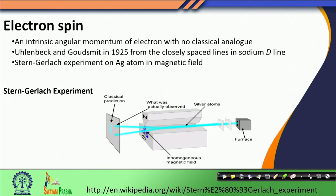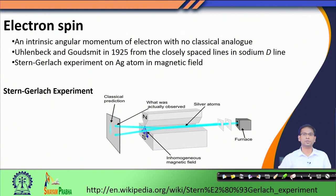Hello students, welcome to today's lecture. We have been discussing the quantum mechanical solution of the hydrogen atom. Today we would discuss one particular aspect of the hydrogen atom problem that we have so far ignored. That is, when we wrote down the Hamiltonian of this hydrogen atom, we said that we have this nucleus and an electron, and the electron is orbiting around the nucleus.